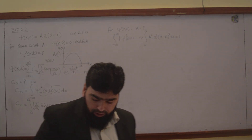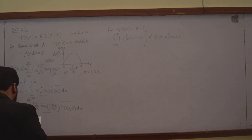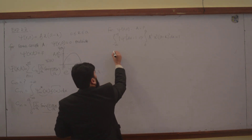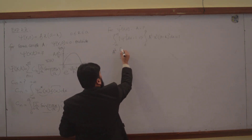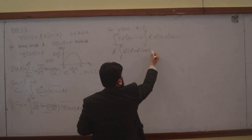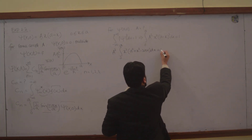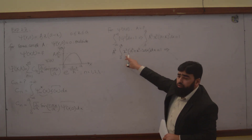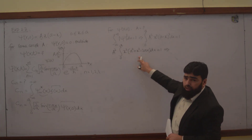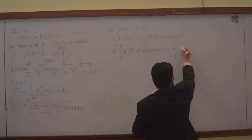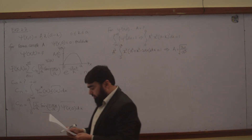We can write what this integral will be equal to. It is not very difficult, because this will be A squared from 0 to A, and then x squared times (A squared plus x squared minus 2Ax) dx equal to 1. This gives you A squared times Ax³/3, and so on. Solving this integral gives you A equals √(30/A⁵). This is the normalization constant.